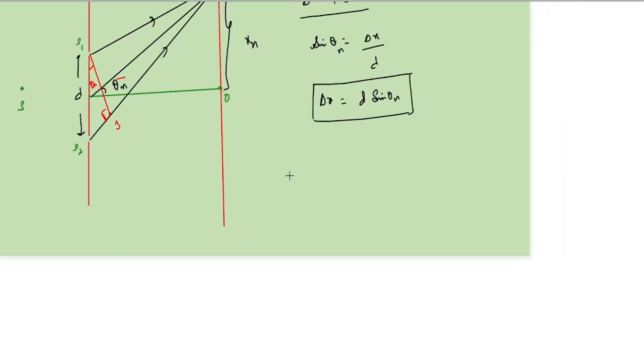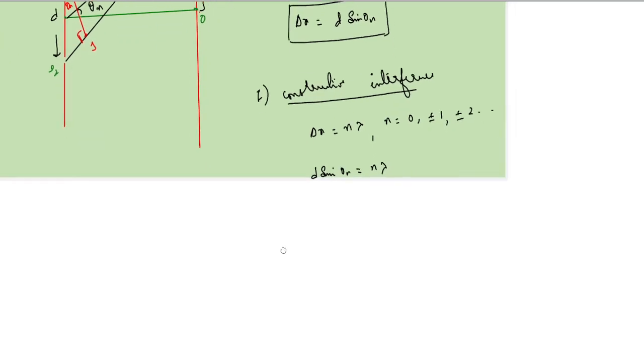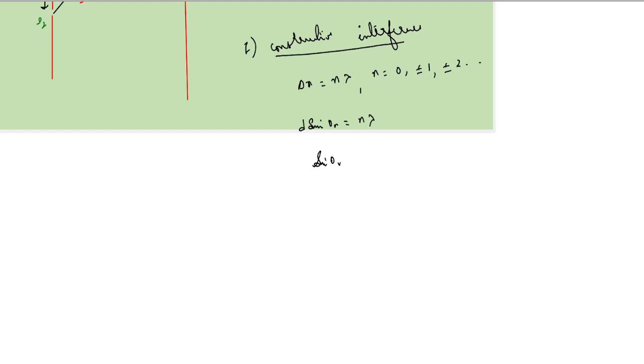Again here, look at constructive interference. Then what we get here would be delta x is equal to n into lambda, where n is equal to 0, 1, 2, etc. Put it back here. Then we get d into sine theta n is equal to n into lambda. From here sine theta n is equal to n lambda by d. Therefore, the angle made by nth bright band is equal to sine inverse of n lambda by small d. This is the angle of the nth bright band.